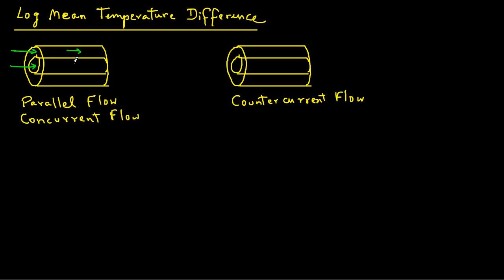On the other hand, we can also have a counter-current flow. In this case, the stream inside the pipe is moving in one direction while the fluid in the outer annular space moves in the opposite direction.